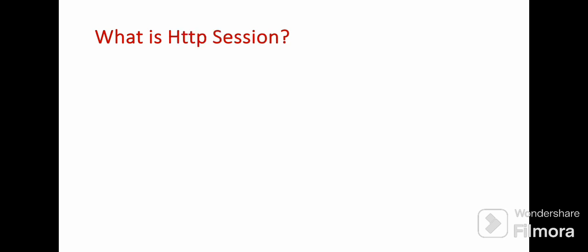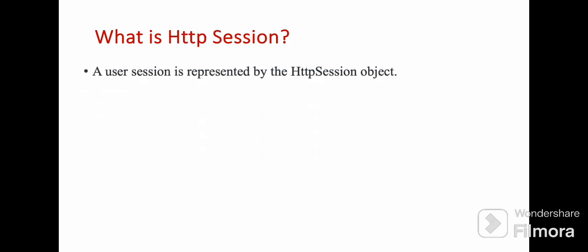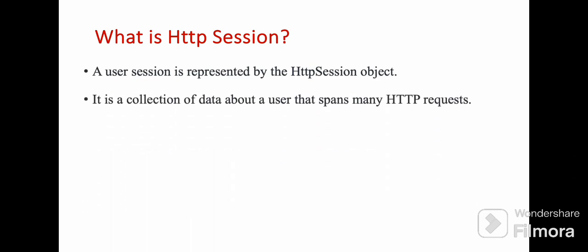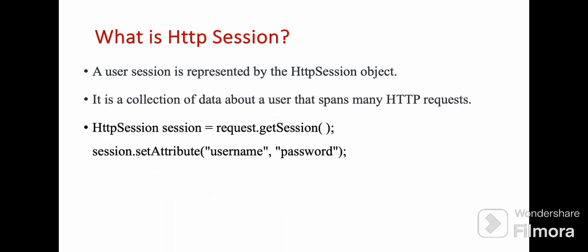What is HttpSession? The user session is represented by the HttpSession object. This is a collection of data about a user that spans many HTTP requests. To get the session, we use request.getSession() method. If you want to set an attribute to the session, use session.setAttribute("username", password). This is how we can set the session.